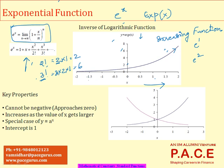Second, this value can never become negative. As you are seeing, as x is decreasing and decreasing, the value of e to the power of x is just coming closer to zero, but it's not becoming below zero, which means it can never be negative.